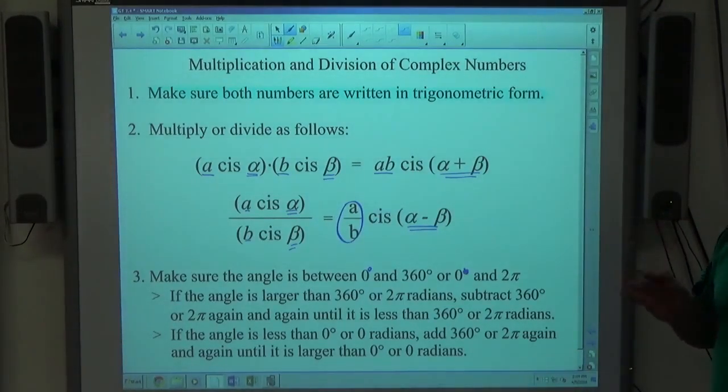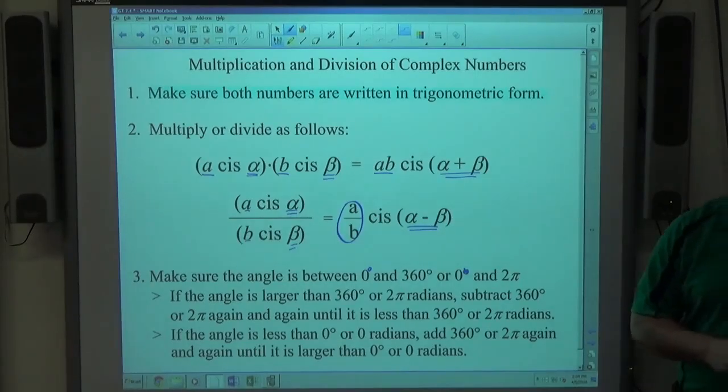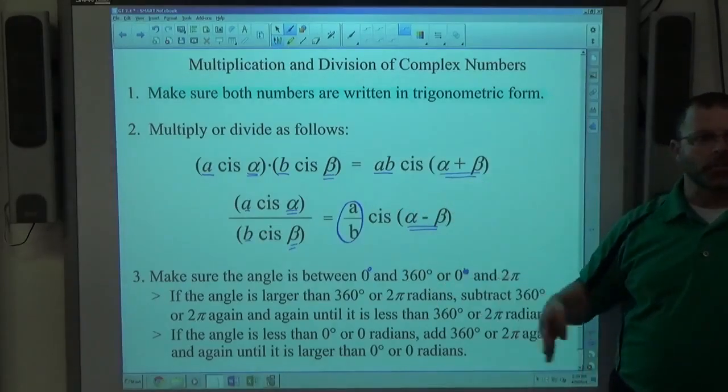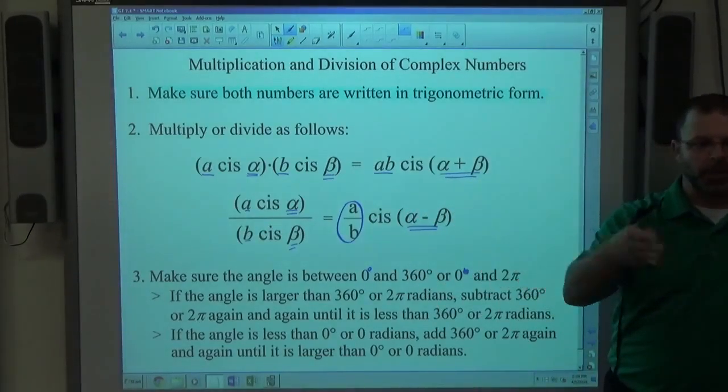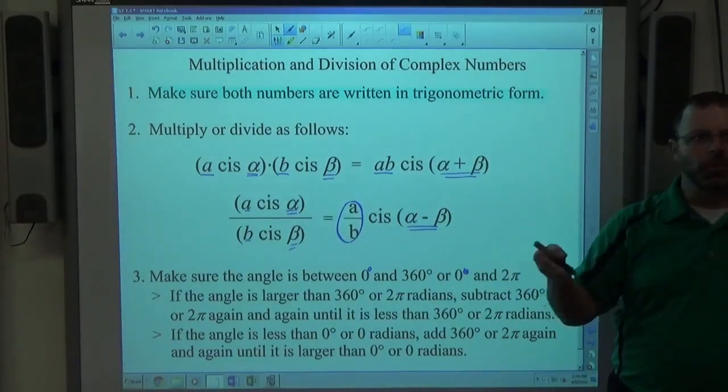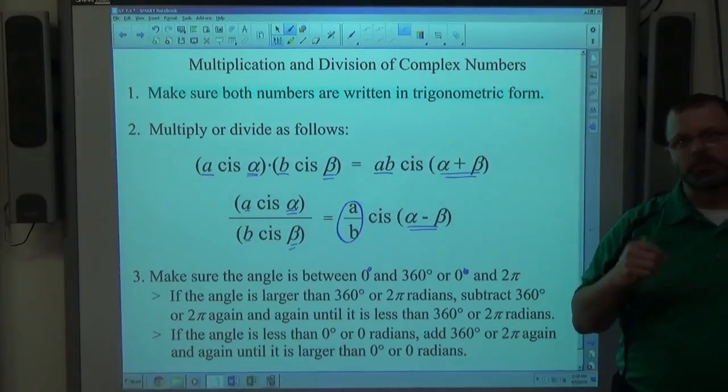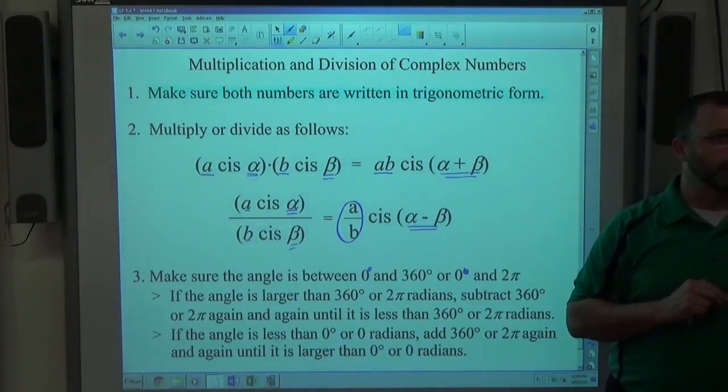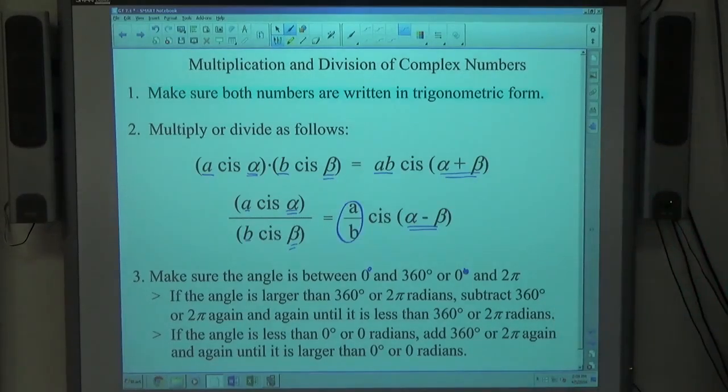And the last thing is make sure you give the answer in the form they're asking for. If they ask for the answer in trigonometric form, it should look like this. If it's asking for standard form, it should be some number plus something i. So 2 plus 3i is standard form. 5 cis 90 degrees is trigonometric form.